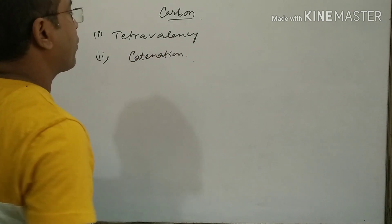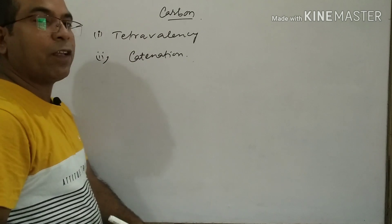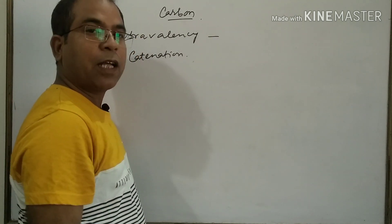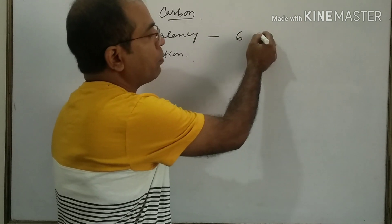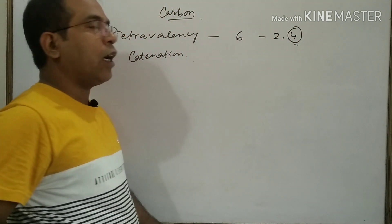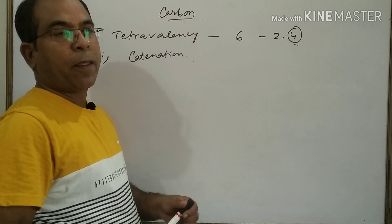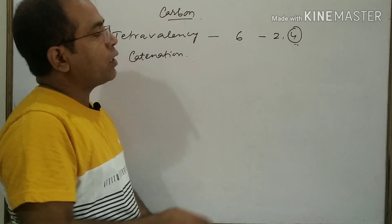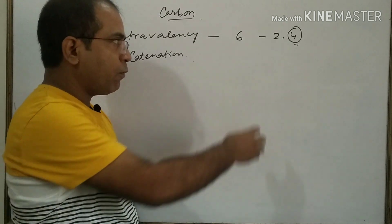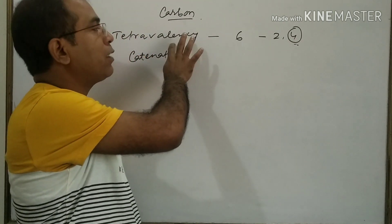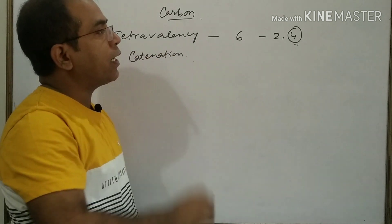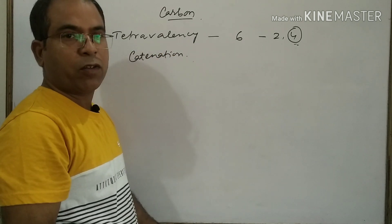What is tetravalency? Tetravalency means 4 valency. The atomic number of carbon is 6, and its valency is 4. That is why it is tetravalent. Carbon neither loses nor gains electrons.